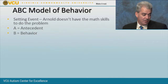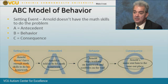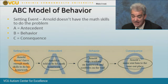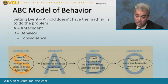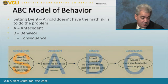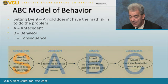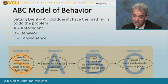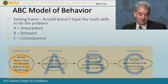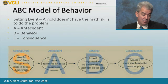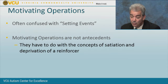Going back to our ABC model with setting events: the setting event is that Arnold doesn't have the math skills. We're giving him grade-level work he doesn't have the ability to do. So when he's told to do his math homework, he scribbles on the wall because he can't do it, gets sent to his room, and gets exactly what he wants — escape. He'll do that seven times a week when you're asking him to do something he can't do.